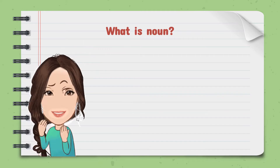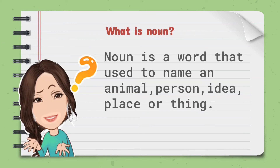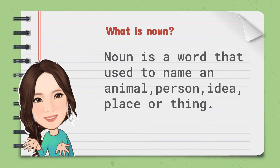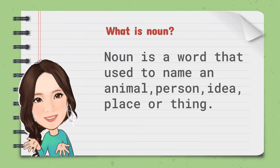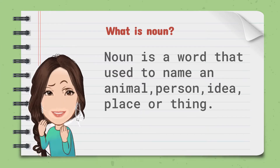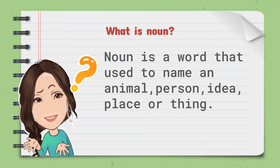What is a noun? A noun is a word used to name an animal, person, idea, place, or thing.